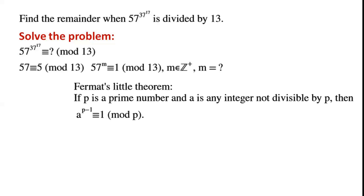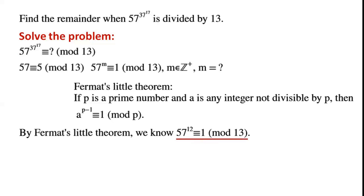By Fermat's little theorem: if p is a prime number and a is any integer not divisible by p, then a to the power of p minus 1 is congruent to 1 mod p. In this case, p is 13 and a is 57. By Fermat's little theorem, we know that 57 to the power of 12 is congruent to 1 mod 13.